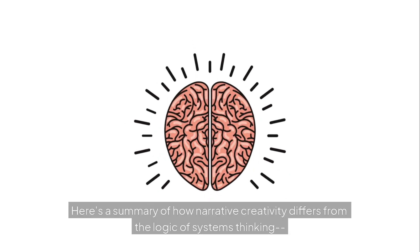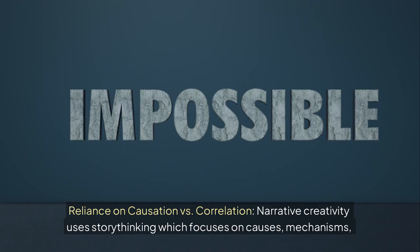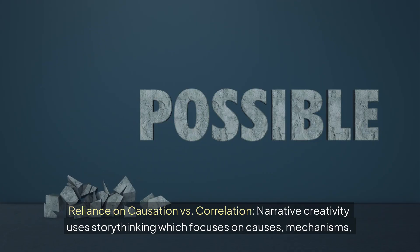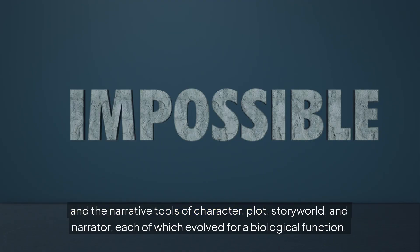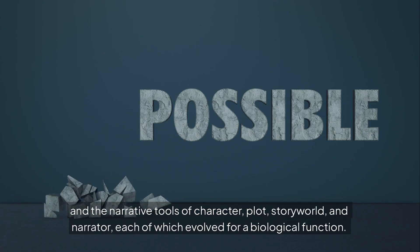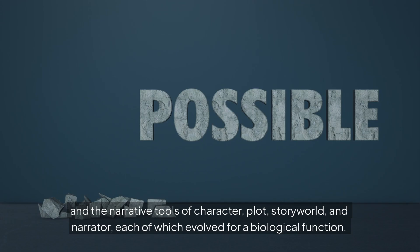Here's a summary of how narrative creativity differs from the logic of systems thinking. Reliance on causation versus correlation: narrative creativity uses story thinking, which focuses on causes, mechanisms, and the narrative tools of character, plot, story world, and narrator — each of which evolved for a biological function.